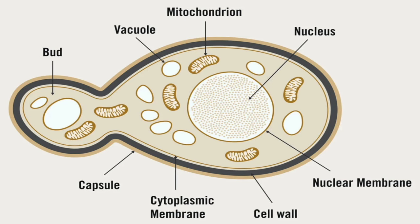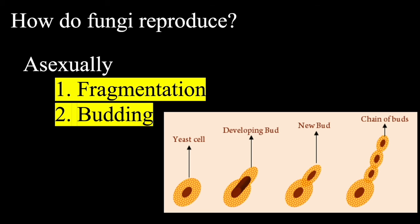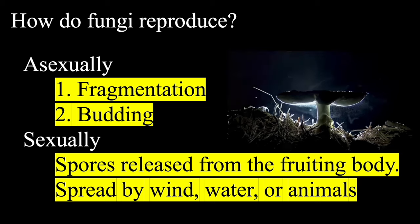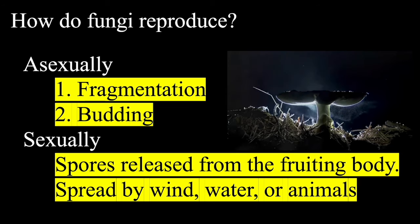Looking at a yeast cell, on the left-hand side of the image is a bud. The second asexual reproduction method is known as budding — a single yeast cell develops a new bud and will form a chain of buds, each having their own set of organelles and nuclei. Lastly, fungi can reproduce sexually. Spores are released from the fruiting body and spread by wind, water, or animals.